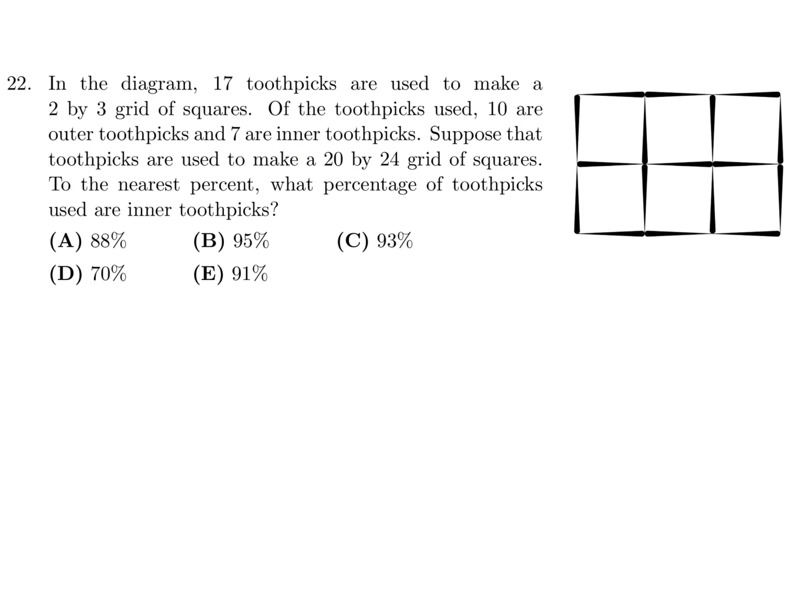In the diagram, 17 toothpicks are used to make a 2 by 3 grid of squares. Of the toothpicks used, 10 are outer and 7 are inner. Suppose that toothpicks are used to make a 20 by 24 grid of squares. To the nearest percent, what percentage of toothpicks used are inner toothpicks?